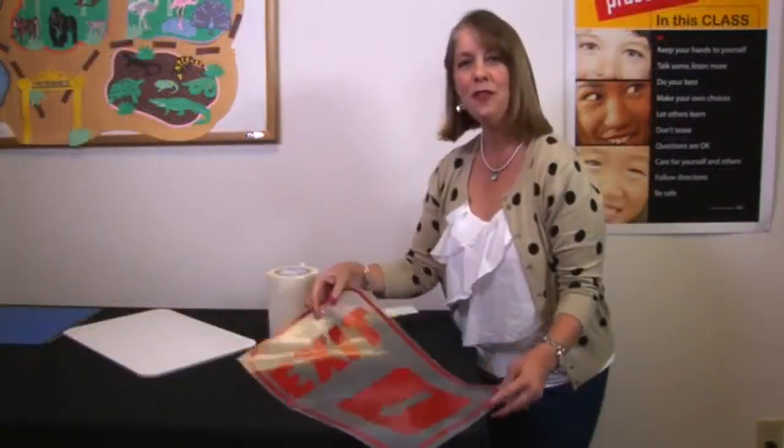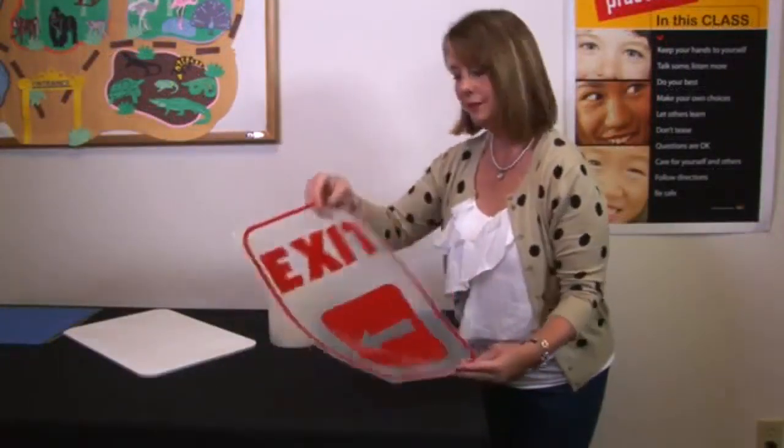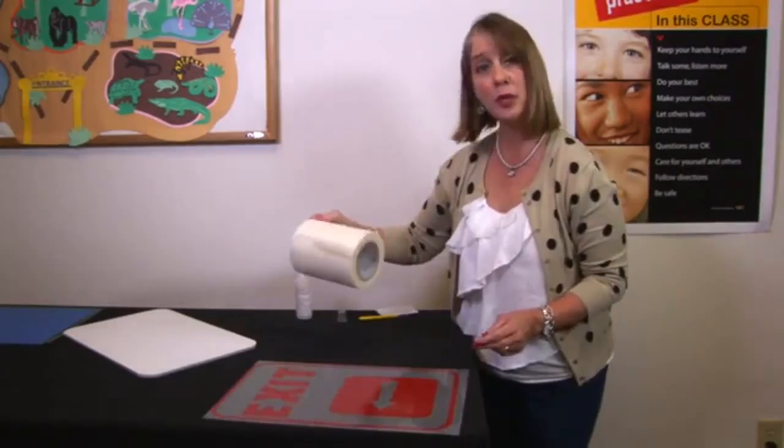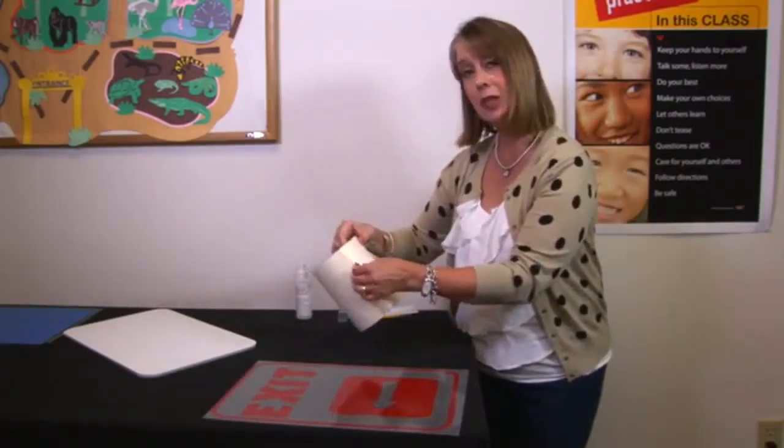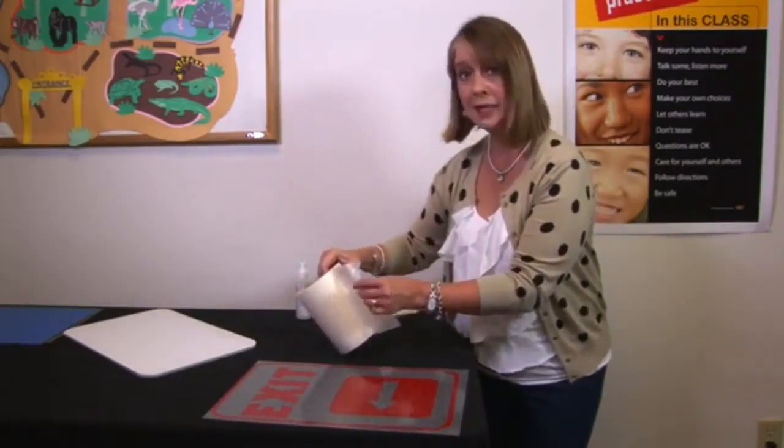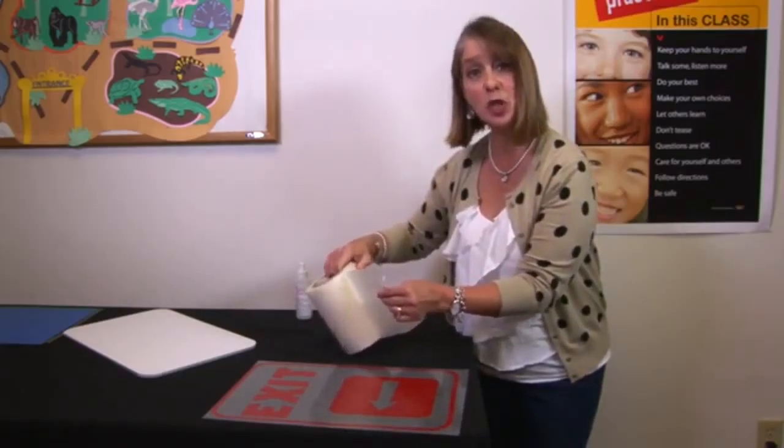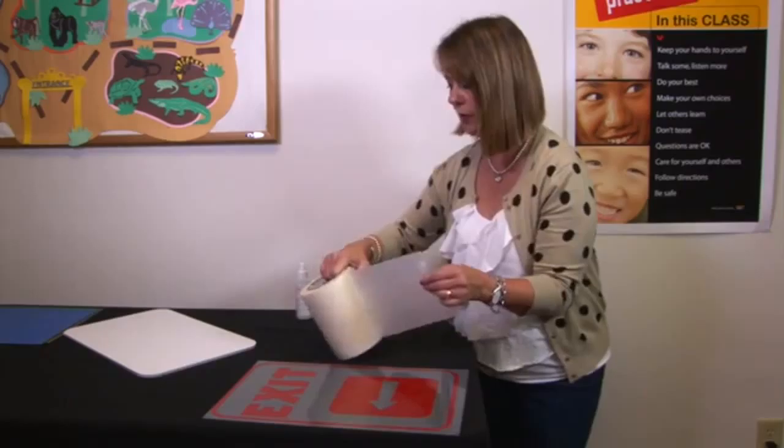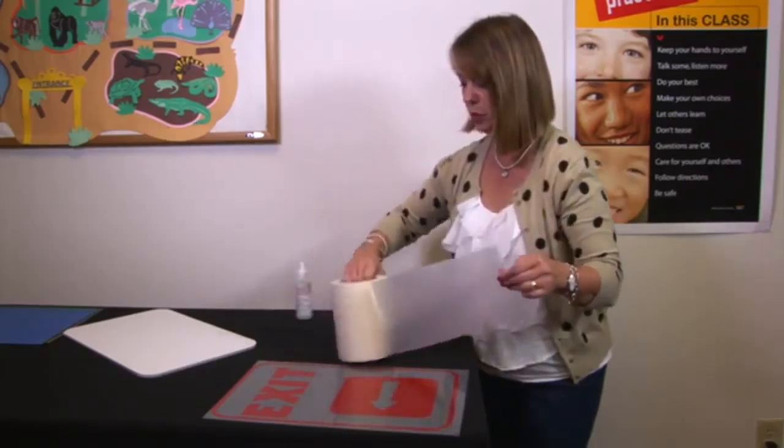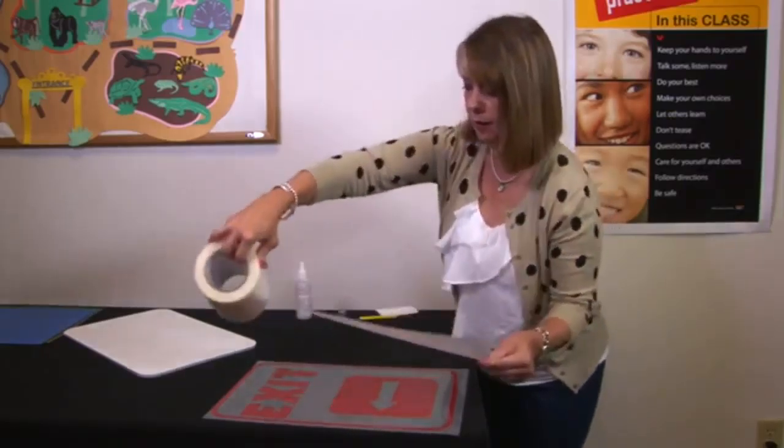Once you have finished weeding the excess vinyl, you want to take your roll of transfer tape. This is a six inch roll which you're going to lay on top of your sheet of vinyl. It's a 12 by 18 inch sheet of vinyl so you need two strips of transfer tape. Just do a quick measure.